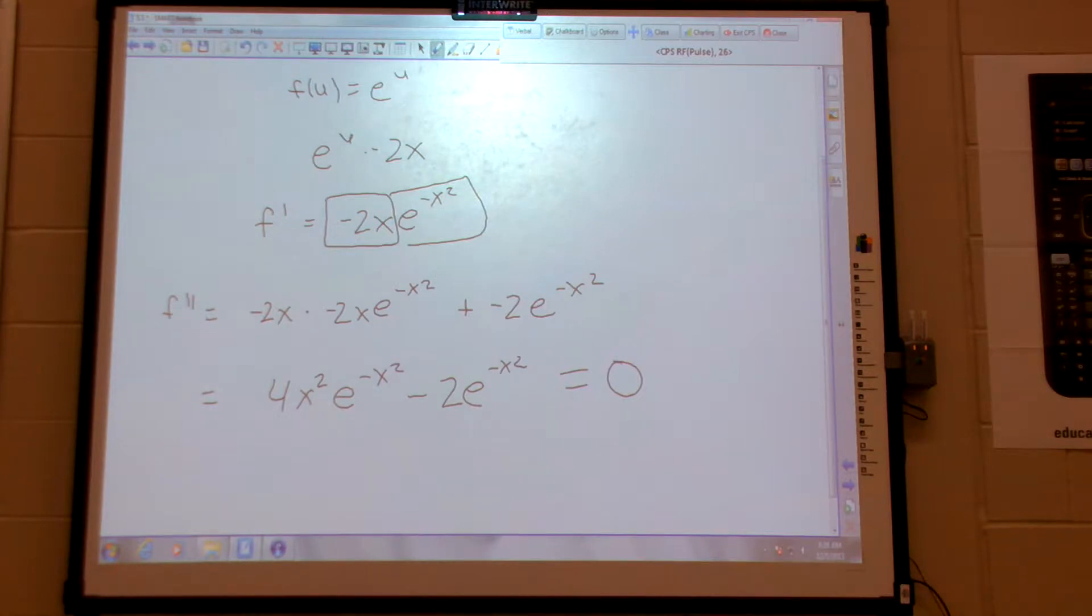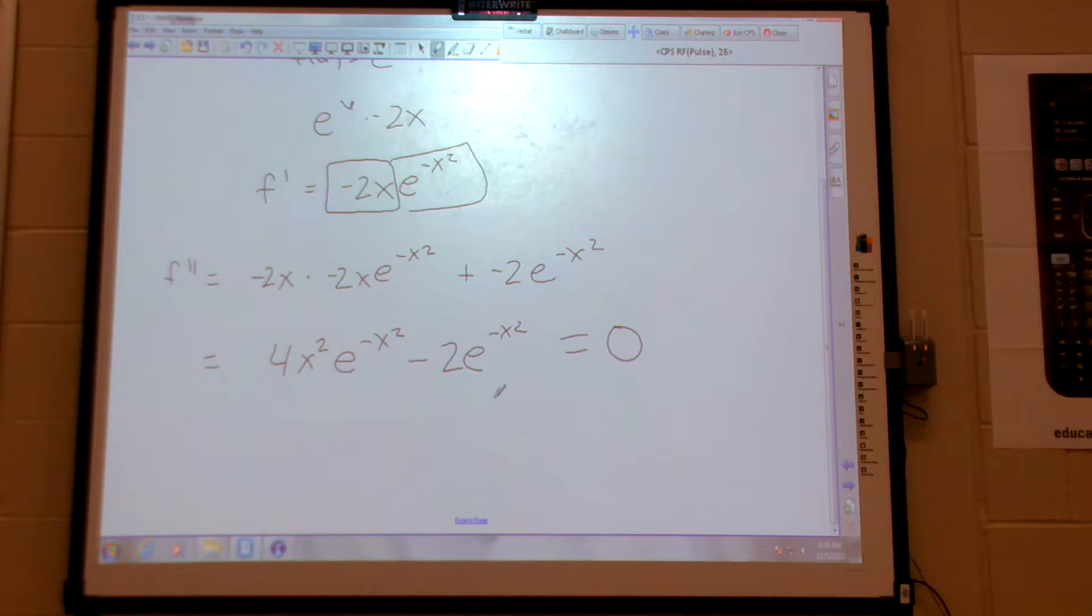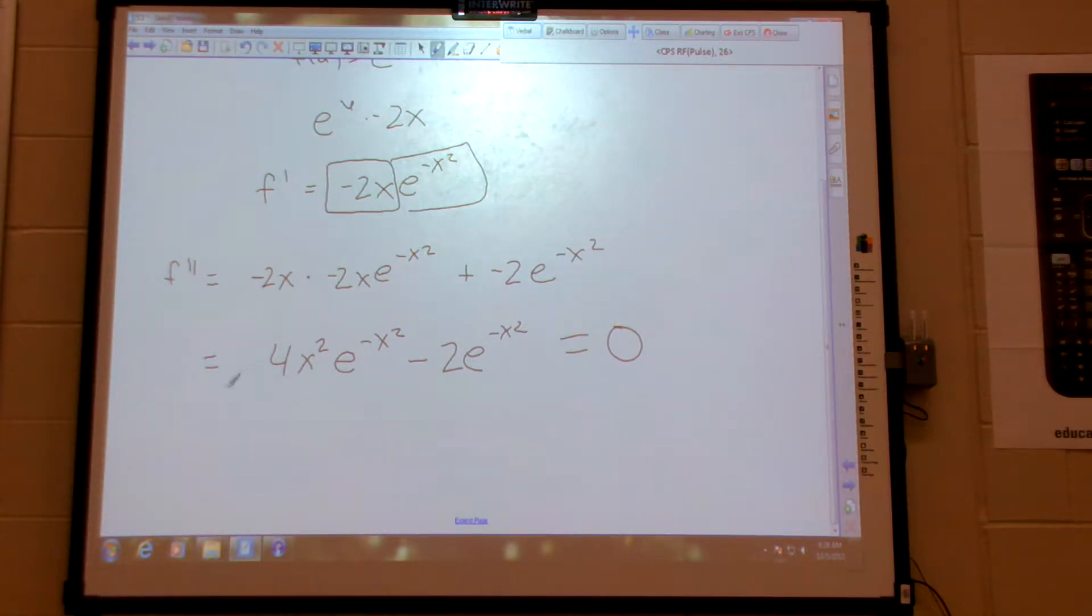Set the second derivative equal to 0. You with me so far? This is where you respond. Okay, set that equal to 0. Factor out that negative x squared, because it's always positive. We don't care about it. And actually, hey, let's take out a 2 as well. So I have 2x squared minus 1. Yeah? Yeah.